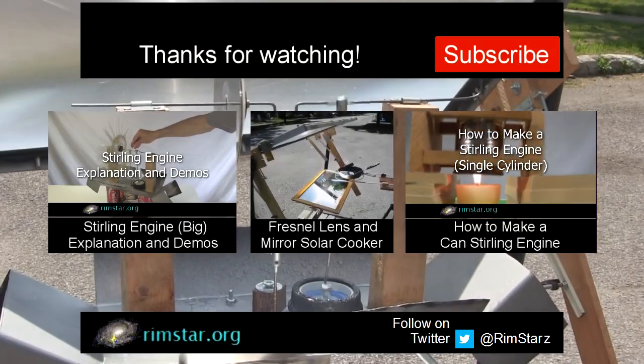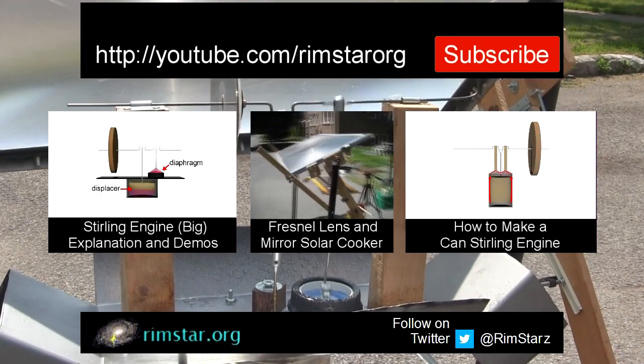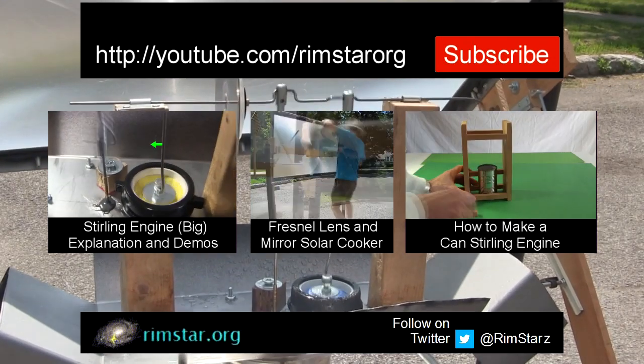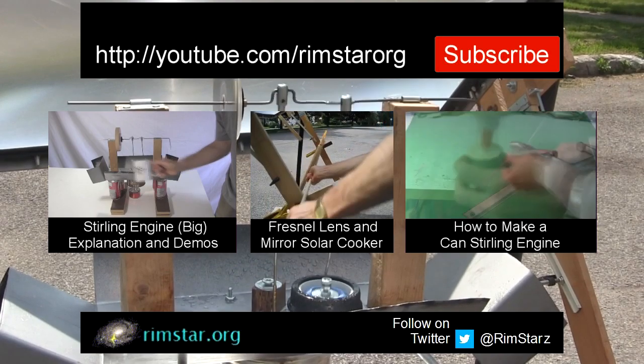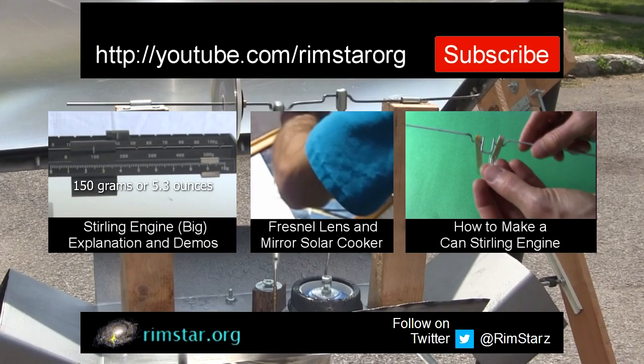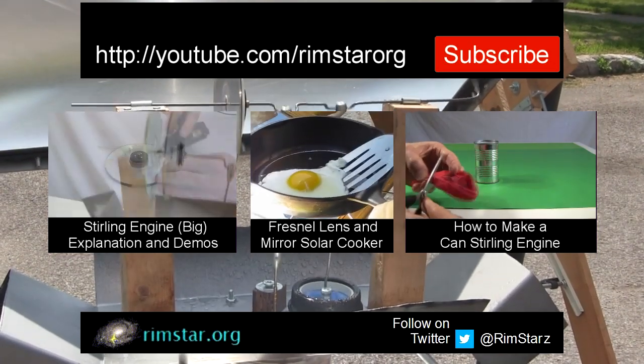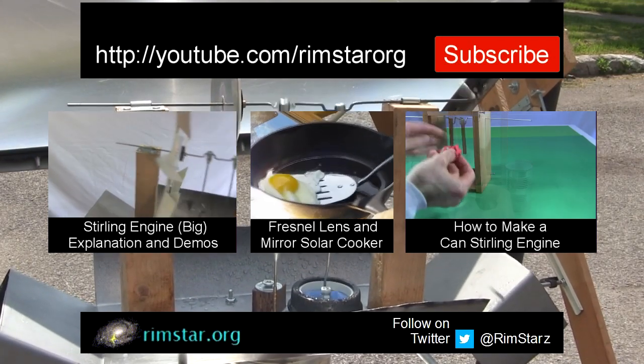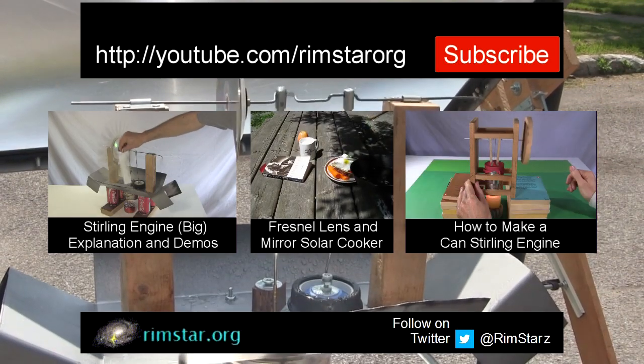Well, thanks for watching. See my YouTube channel RimstarOrg for more videos like this. That includes one explaining how this Stirling engine works, along with demonstrations of it running indoors. Another showing me assembling my Fresnel lens support structure and mirror in more detail, and then using it as a solar cooker to fry some eggs for lunch. And one showing step-by-step how to make a simpler Stirling engine, using a small tomato can for the cylinder. And don't forget to subscribe if you like these videos, or give a thumbs up, or leave a question, or comment below. See you soon!